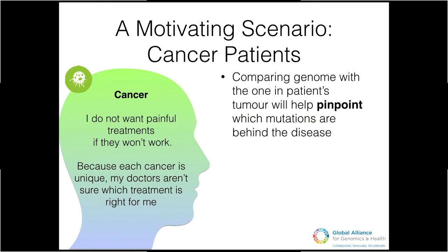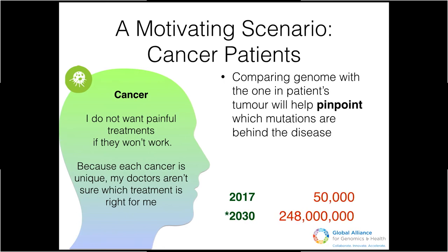Why do we care about such a task? Today in cancer, we don't necessarily know the right treatment for each patient. Sometimes patients receive treatment that isn't suitable. Using genomic sequences, we can find other patients, see what treatment they got, whether it was successful, and use that to select or avoid treatments. This is already happening — 50,000 genomes have been sequenced for this task today, and according to this organization, the numbers will grow much larger in the future.